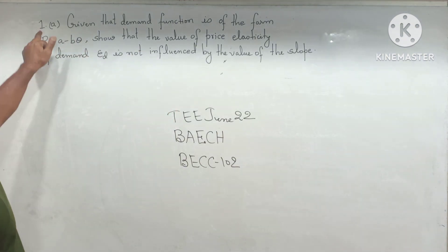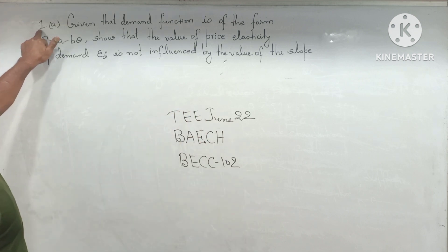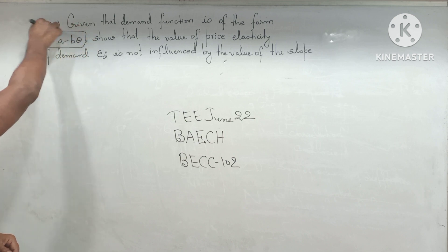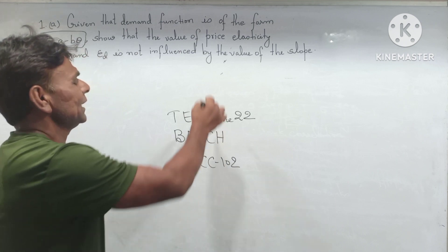You can see question number 1, Terminal Examination 22. Given that the demand function is of the form P = A - BQ, show that the value of price elasticity of demand ED is not influenced by the value of the slope. This question carries 10 marks.